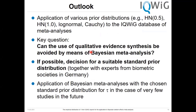In the near future, we want to investigate whether we can really avoid qualitative evidence synthesis by using Bayesian meta-analysis. We could say yes to this question if, in the situation shown at the beginning — two or three significant studies where Knapp-Hartung yields a non-significant pooled estimate — the Bayesian approach with weakly informative prior yields a significant overall effect. If successful, we will discuss our decision for a suitable standard prior distribution with experts from biometric societies in Germany, and then apply Bayesian meta-analysis with this chosen standard prior for tau in the case of very few studies.